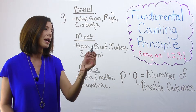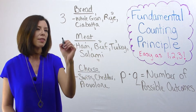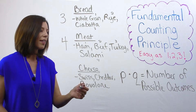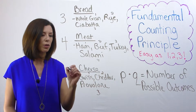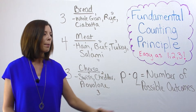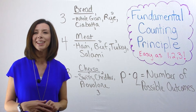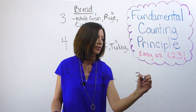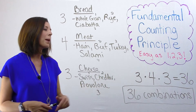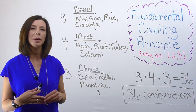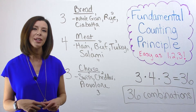In my meat category, I have ham, beef, turkey, and salami — so that would be four possibilities. And then with my cheese, I've got swiss, cheddar, and provolone — so three possibilities. I'm going to go ahead and multiply them to figure out how many different combinations I can have for my sandwich. Three times four times three gives me 36 possible combinations of sandwiches.